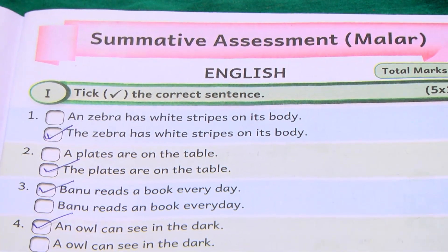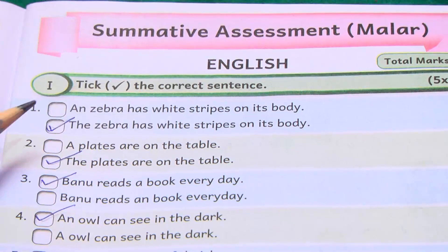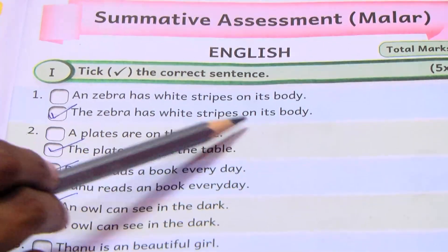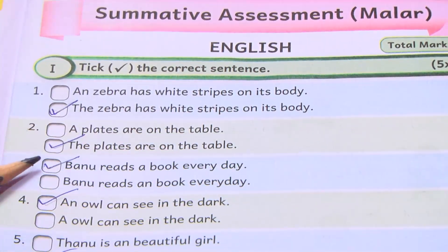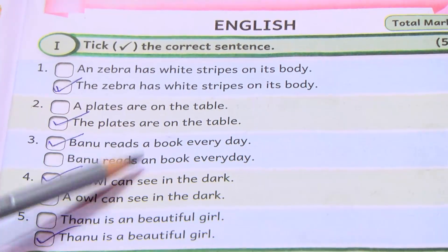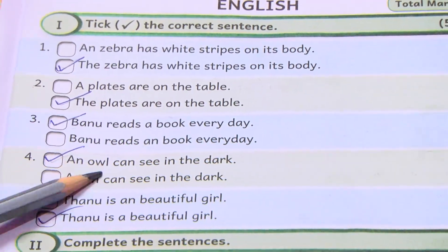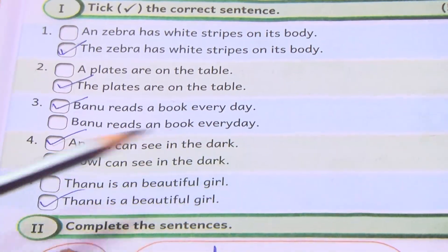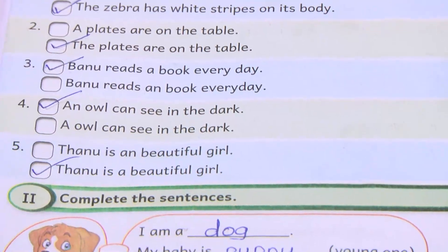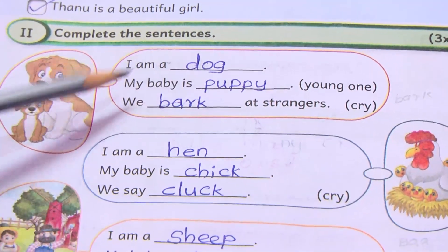Summative Assessment for Malar. Pick the correct sentence: The zebra has white strips on its body. The plates are on the table. Banu reads a book everyday. An owl can see in the dark. Danu is a beautiful girl.